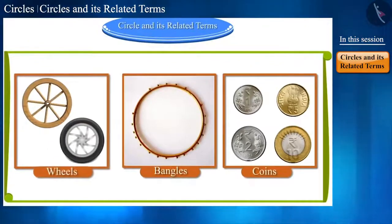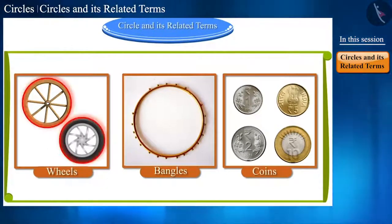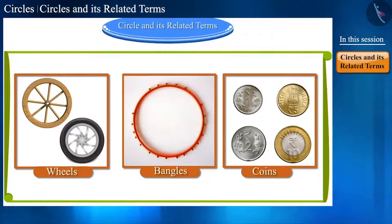Friends, we see many round objects around us and use them. For example, wheels, bangles, coins, etc.